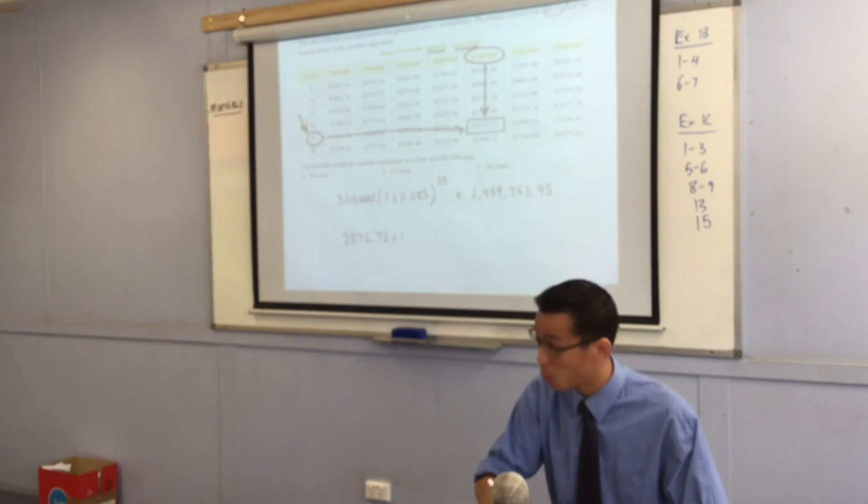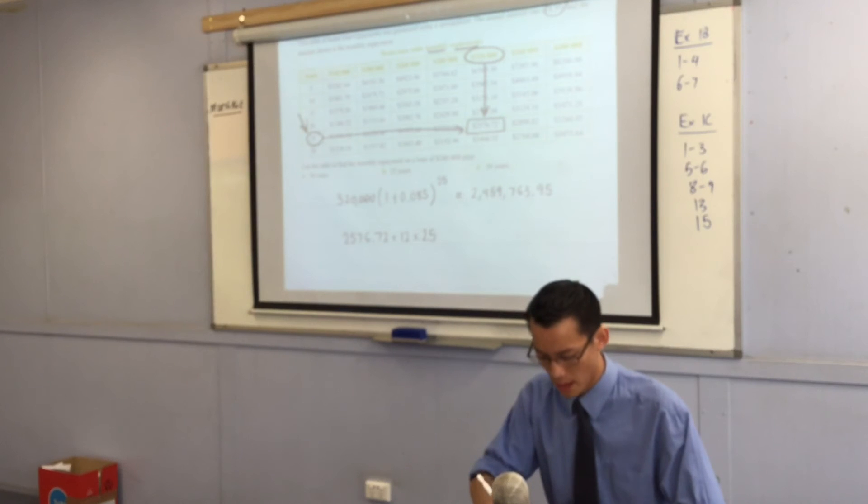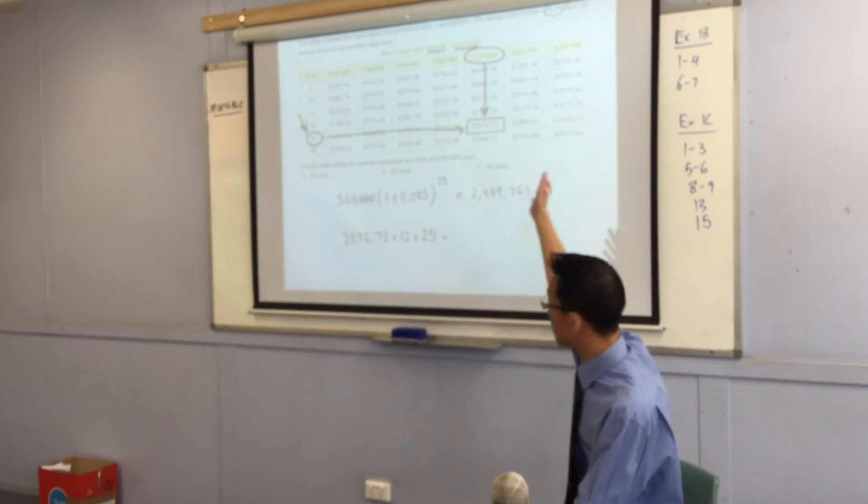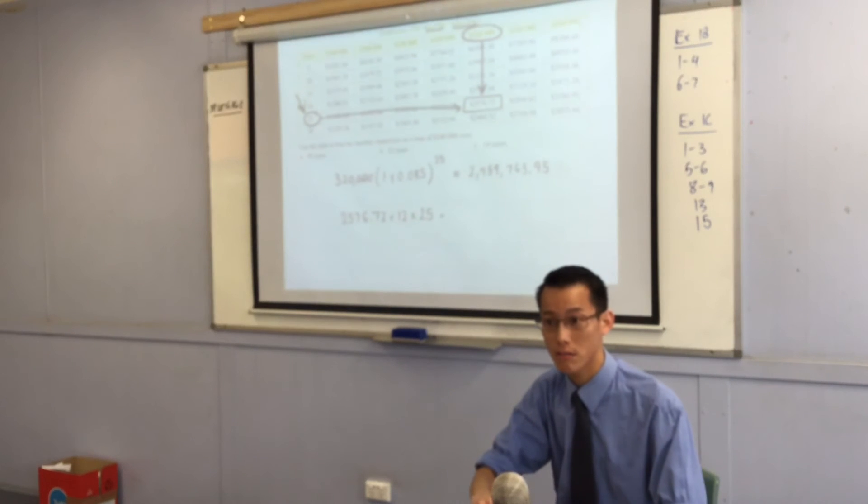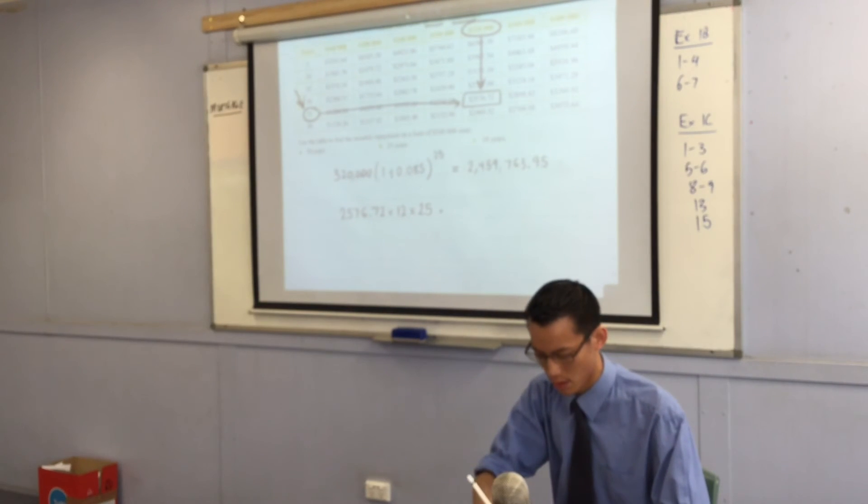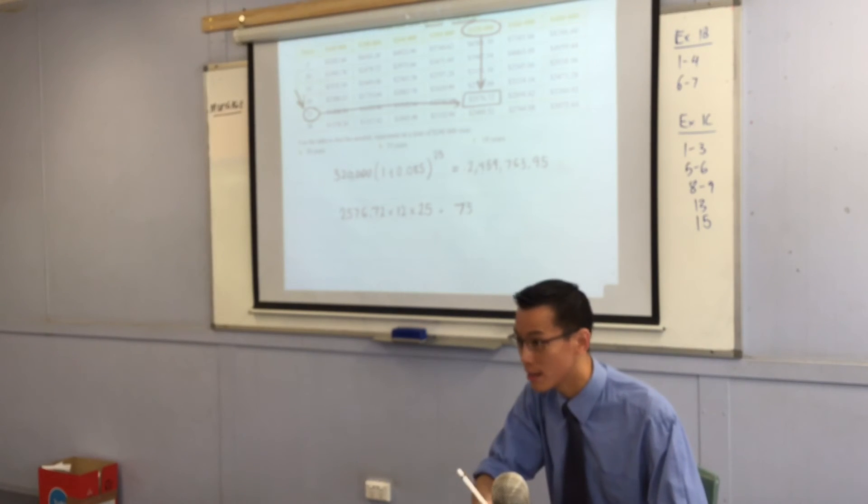Well, it's going to be 12 times 25, whatever that happens to be, which I think is 300. So when you multiply that number by 300, what do you get?